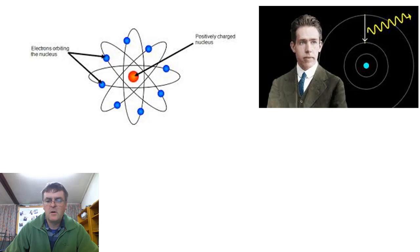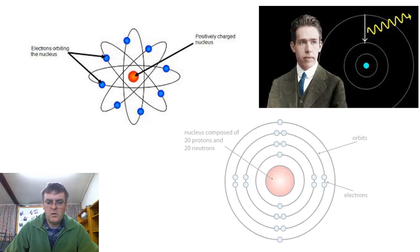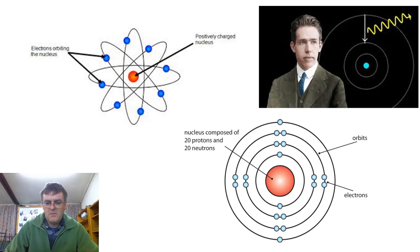Like they're planets around the sun, they were orbits around the nucleus, and each orbit could fit so many electrons into it. So we organized our atoms into layers of electrons around the outside of it.